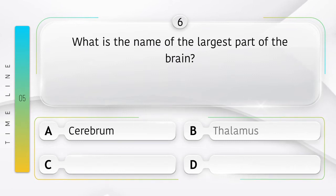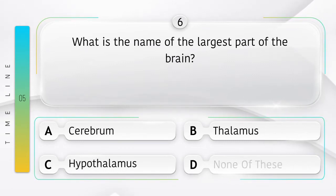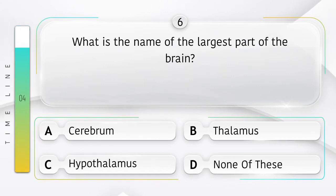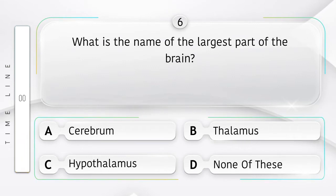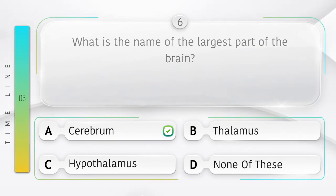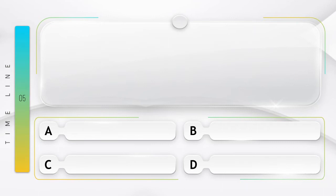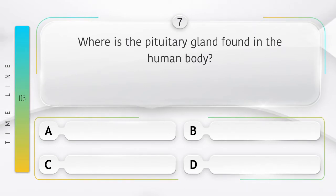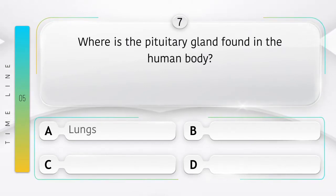What is the name of the largest part of the brain? Option A: cerebrum, B: thalamus, C: hypothalamus, D: none of these. Answer is option A: cerebrum.